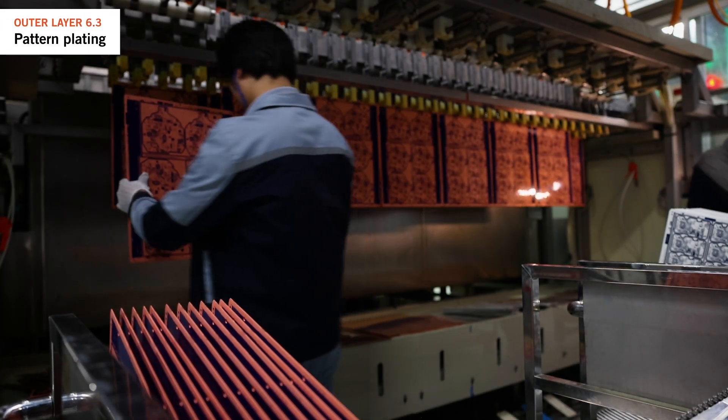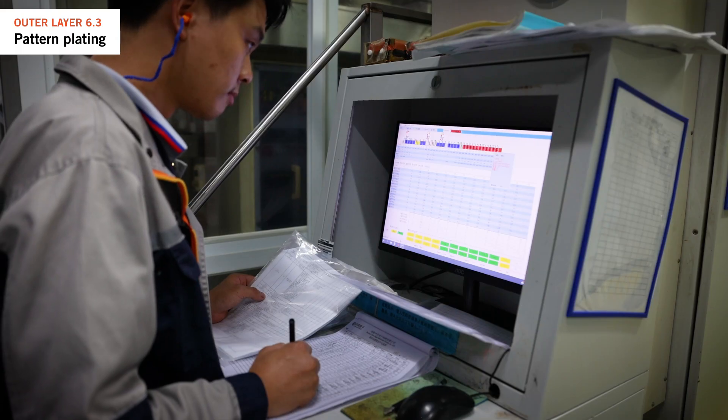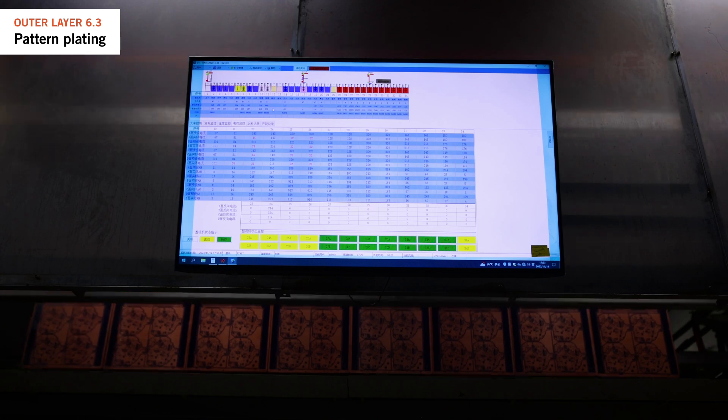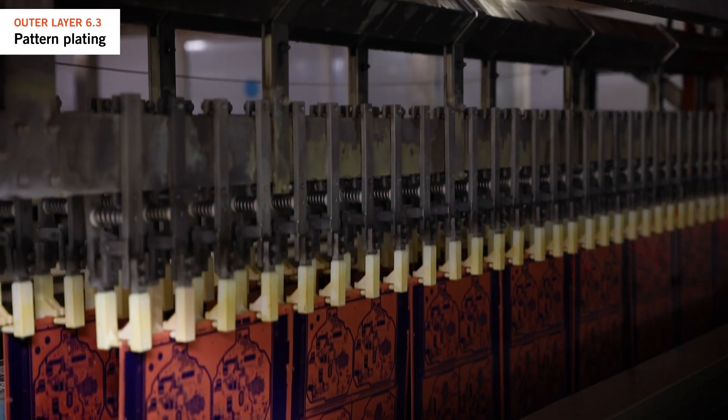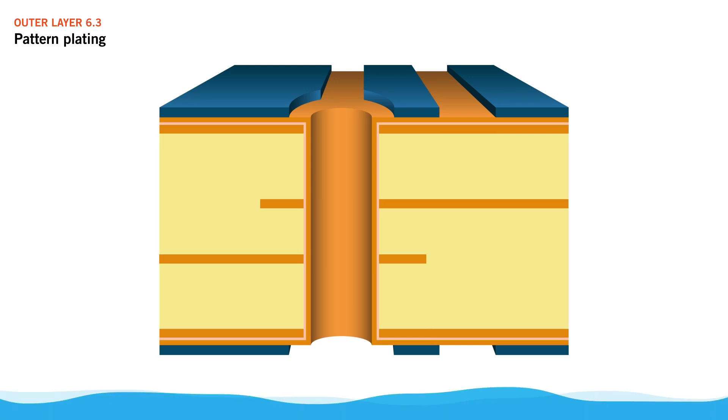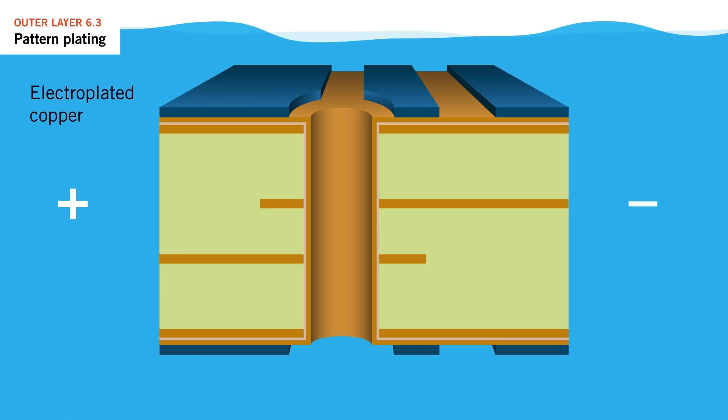To put it simply, in this process we add extra copper to the panel only where we want it. As we continue to define the outer layer circuitry, this is another electrolytic plating process adding copper only to the areas exposed during the outer layer imaging and developing, including through the holes.